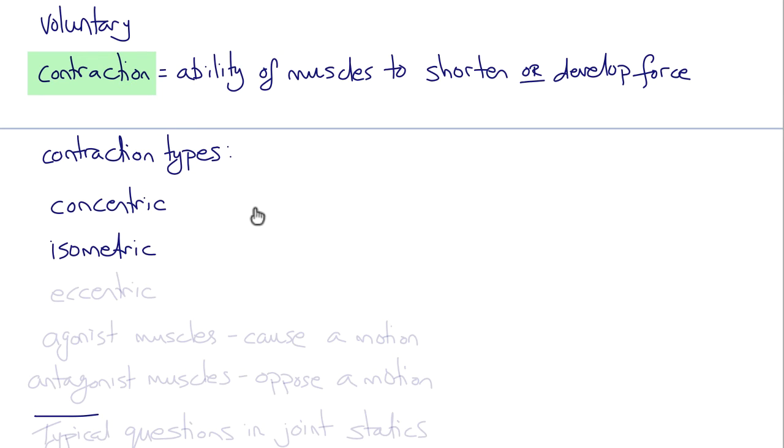Isometric contractions are muscle contractions where the muscle develops force at constant length, and eccentric contractions are contractions that occur when the muscle is lengthening, such as when you're walking downhill or riding a bike.